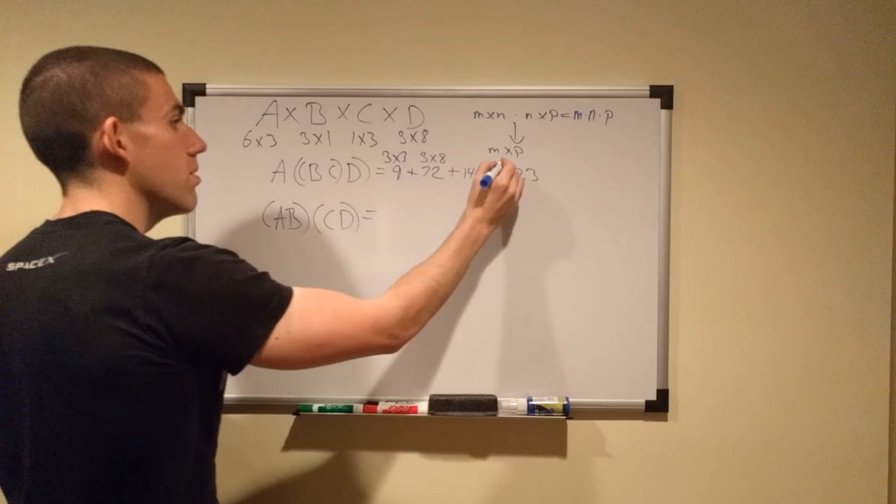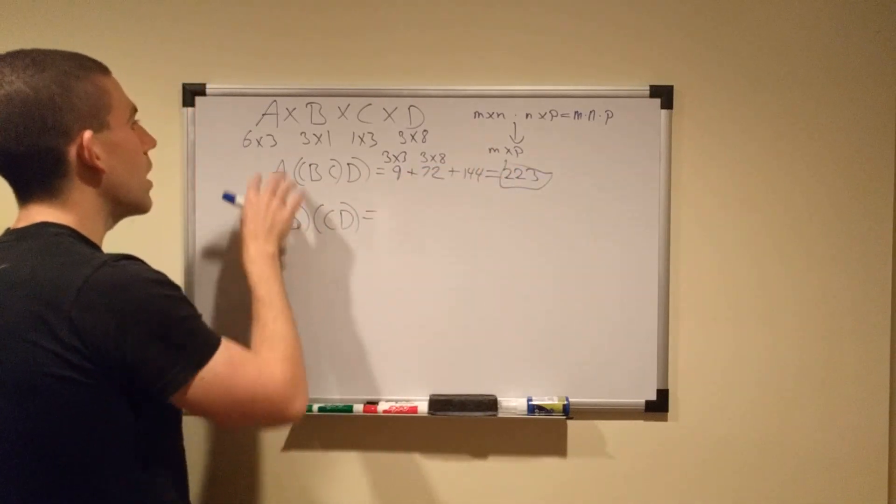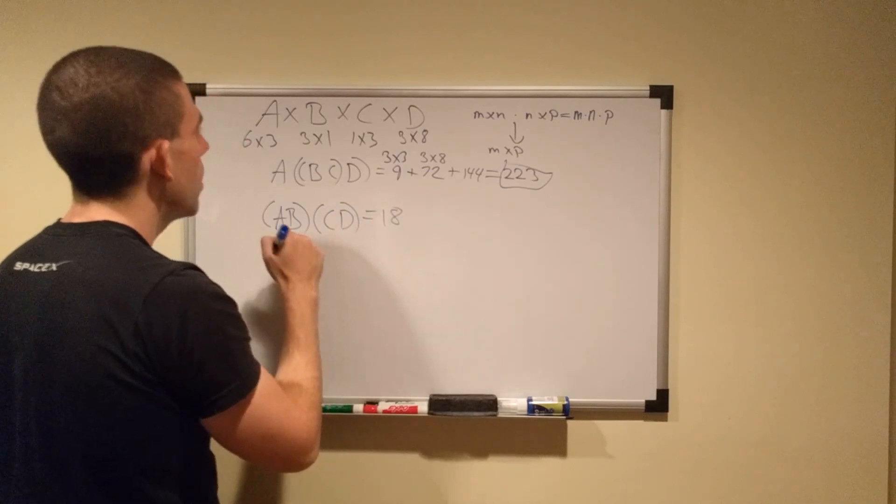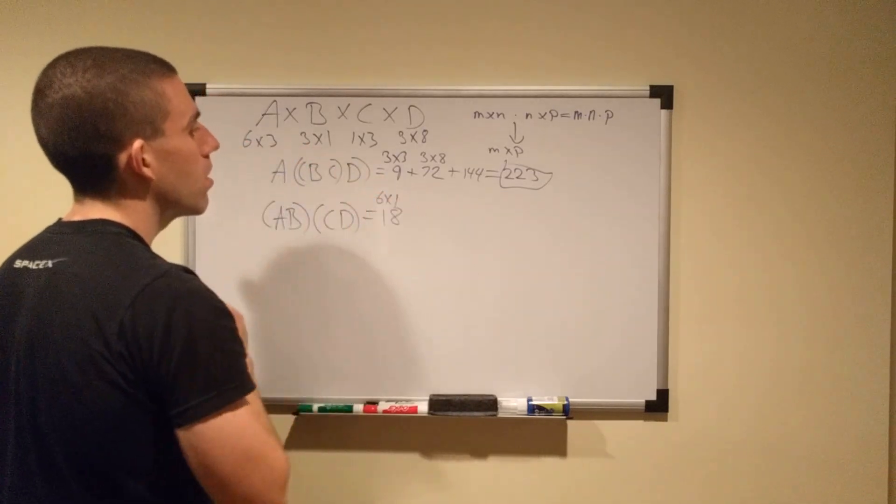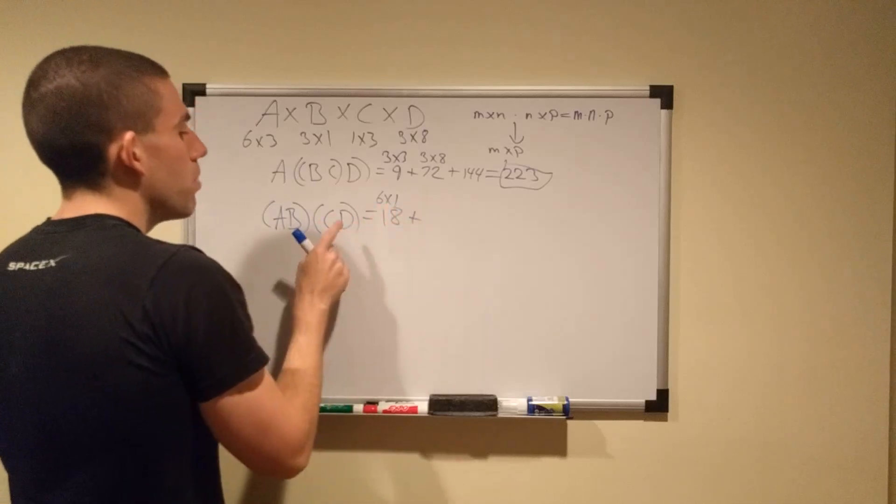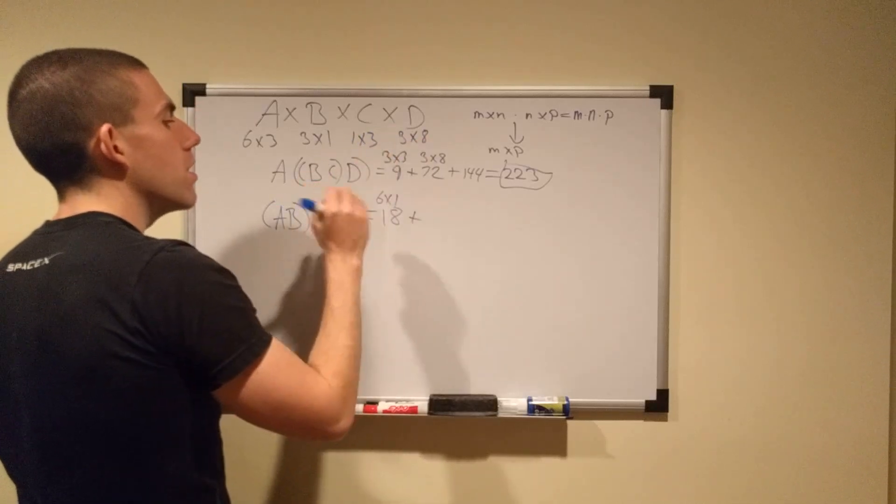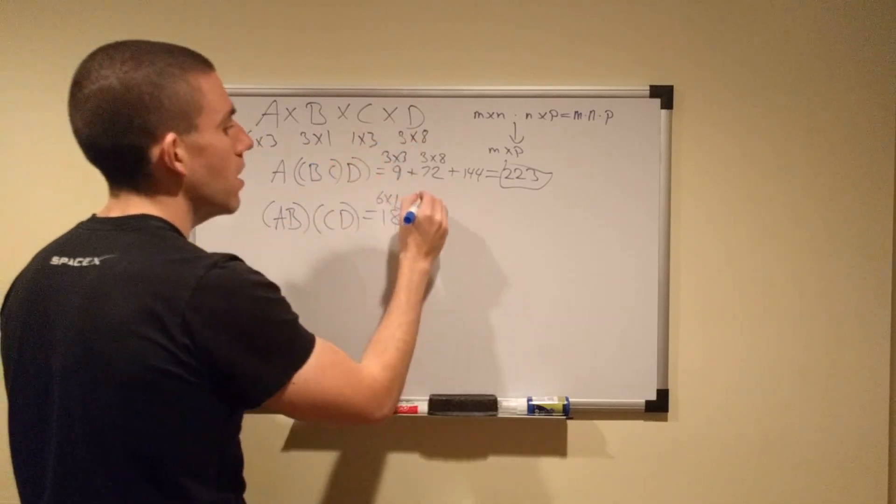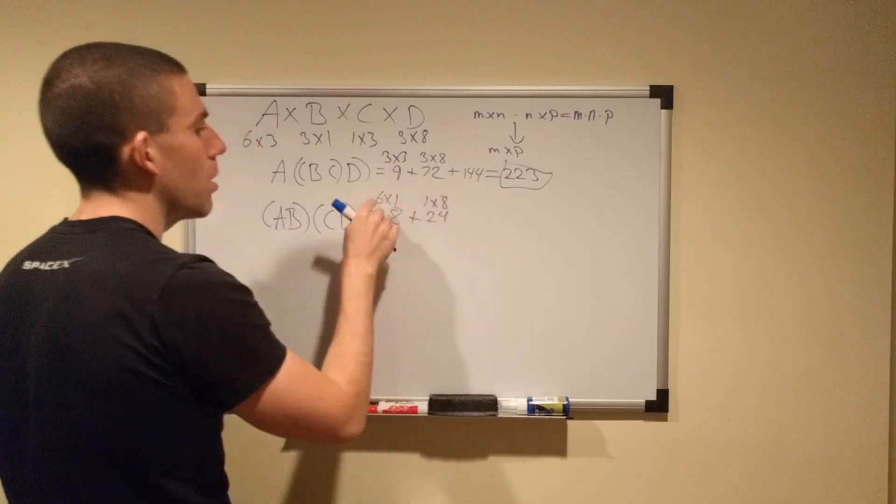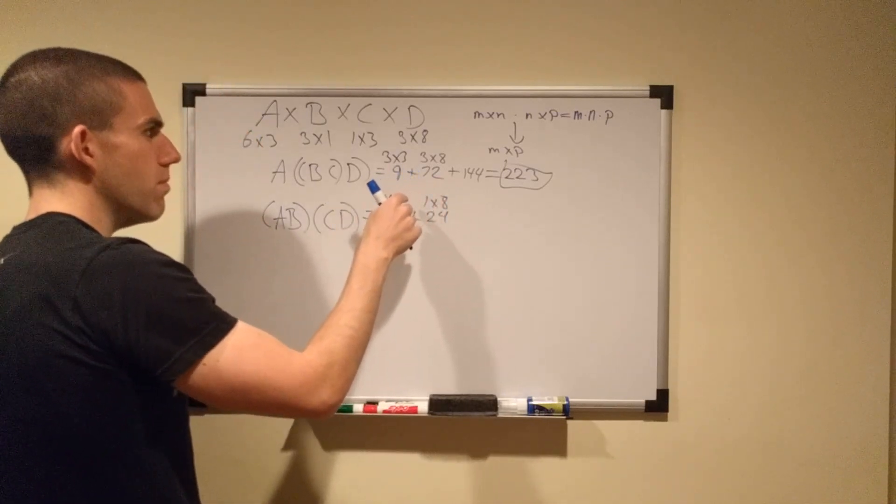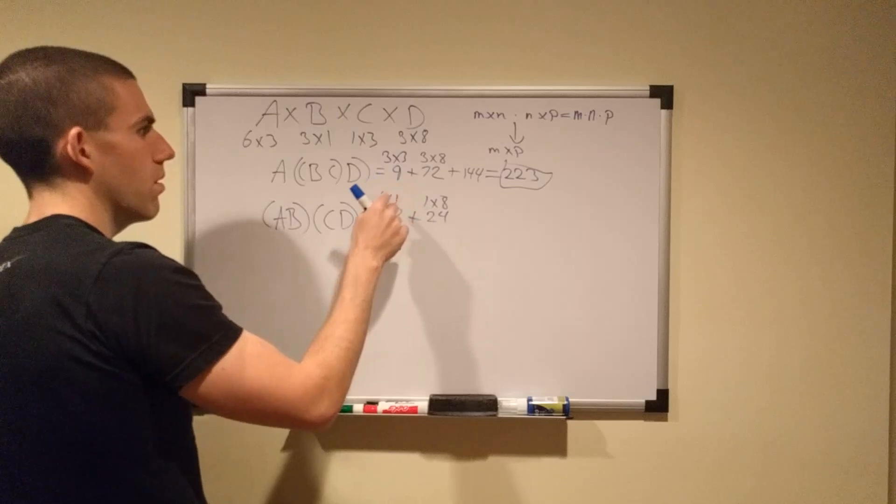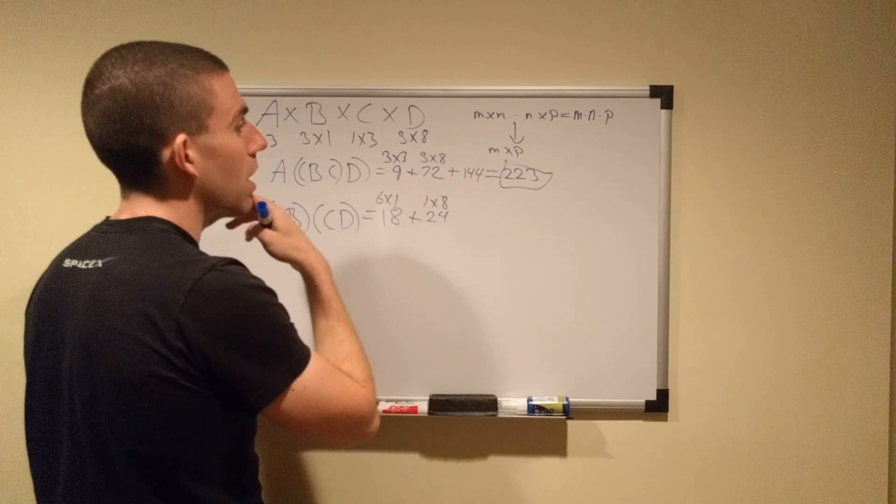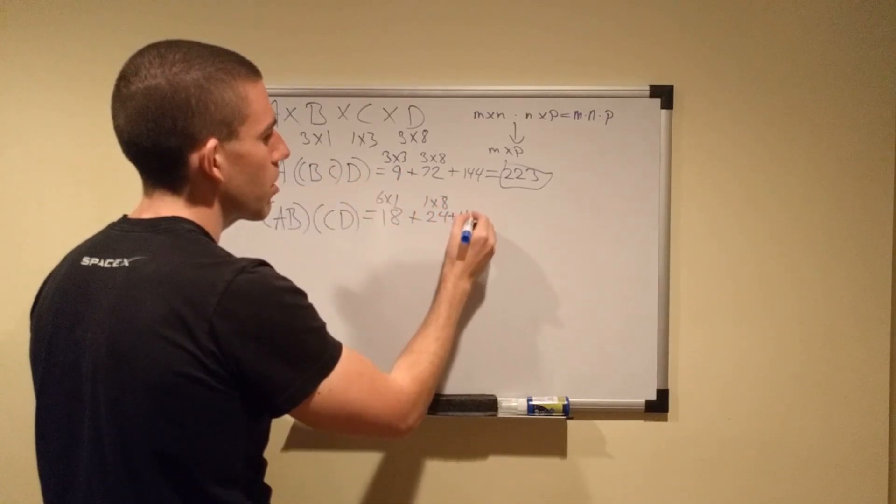But down here, we have A by B, which is 6 times 3 is 18 times 1 is 18, and yields a 6 by 1 matrix. Plus the cost of C and D, 1 by 3 by 8 is 24, and yields a 1 by 8. And then we have 6 by 1 by 8, and 6 times 1 times 8 is, I think, 48.